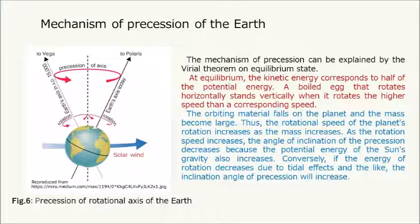The mechanism of precession can be explained by the Virial theorem on equilibrium state. At equilibrium, the kinetic energy corresponds to half of the potential energy. A boiled egg that rotates horizontally stands vertically when it rotates at a higher speed. Orbiting material falls onto the planet and its mass increases, so the rotational speed increases as the mass increases. As the rotation speed increases, the angle of inclination of the precession decreases because the potential energy of the sun's gravity also increases. Conversely, if rotational energy decreases due to tidal effects, the inclination angle of precession will increase.